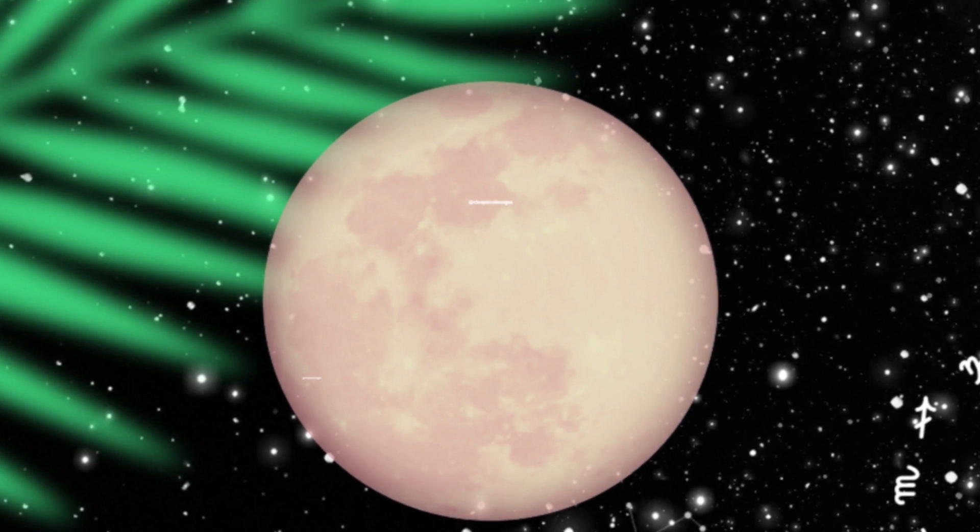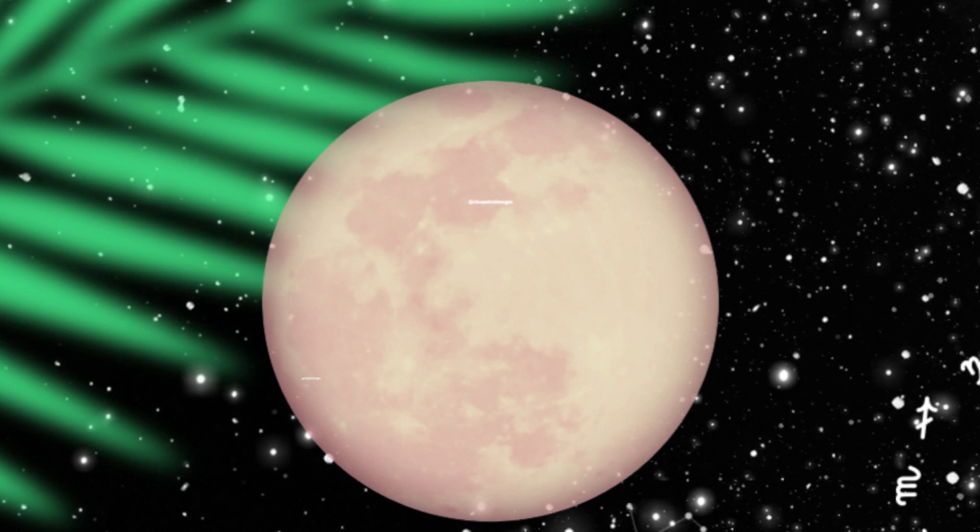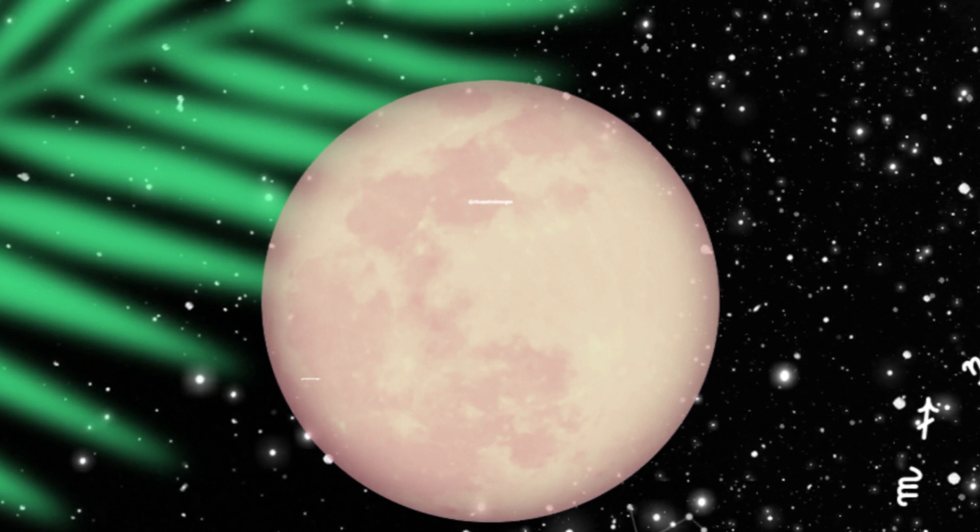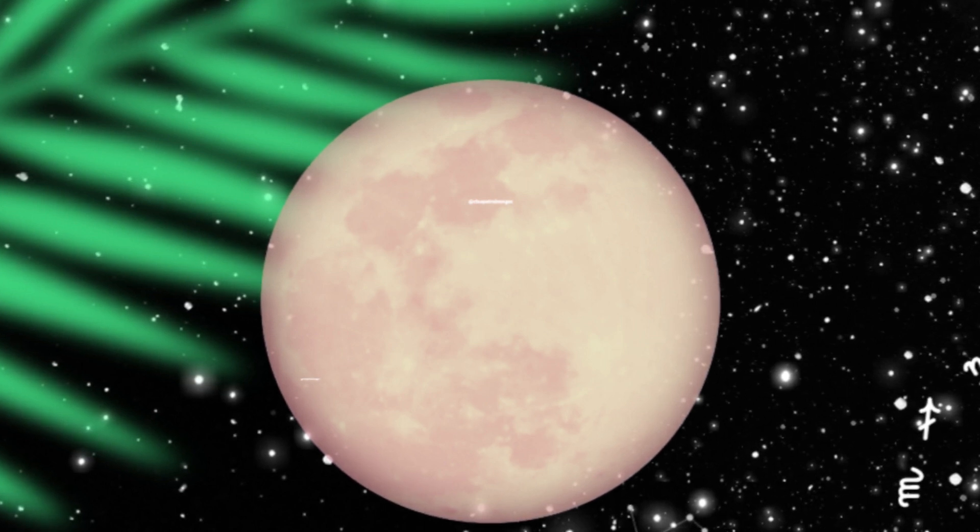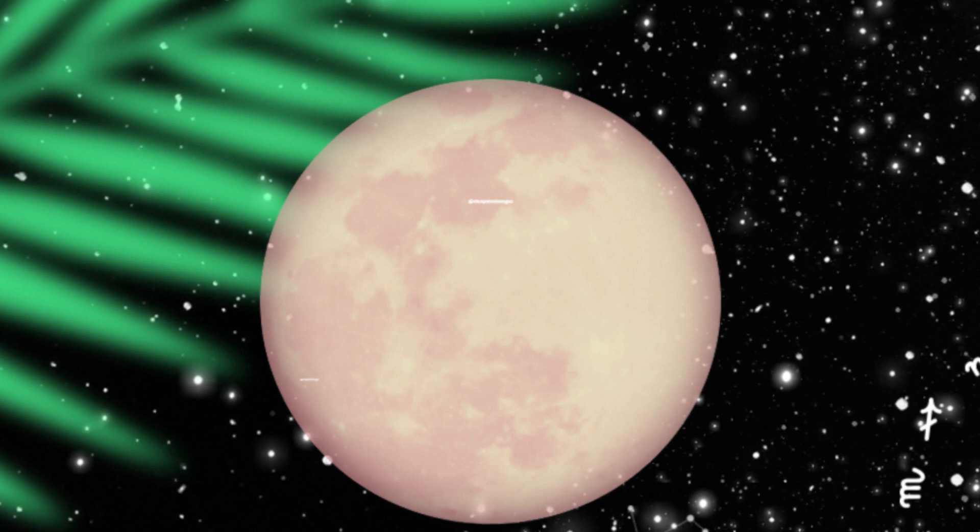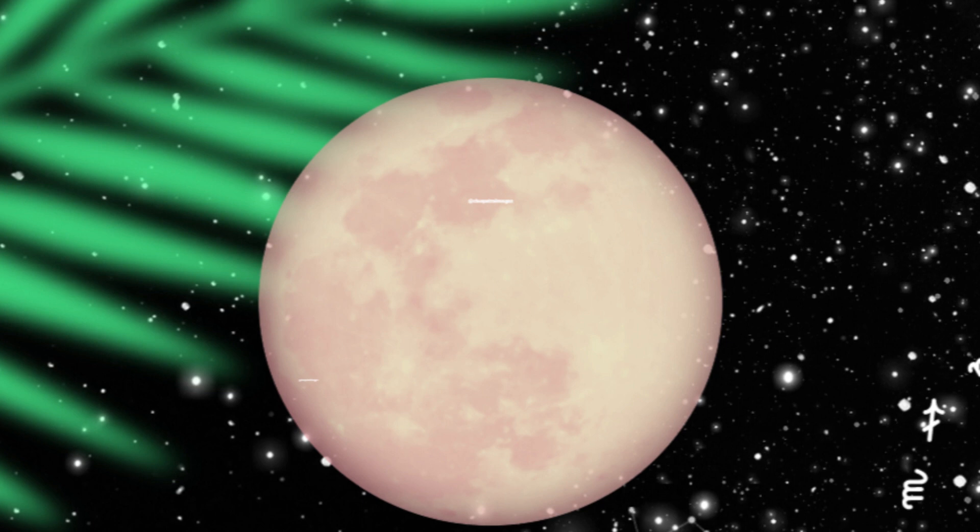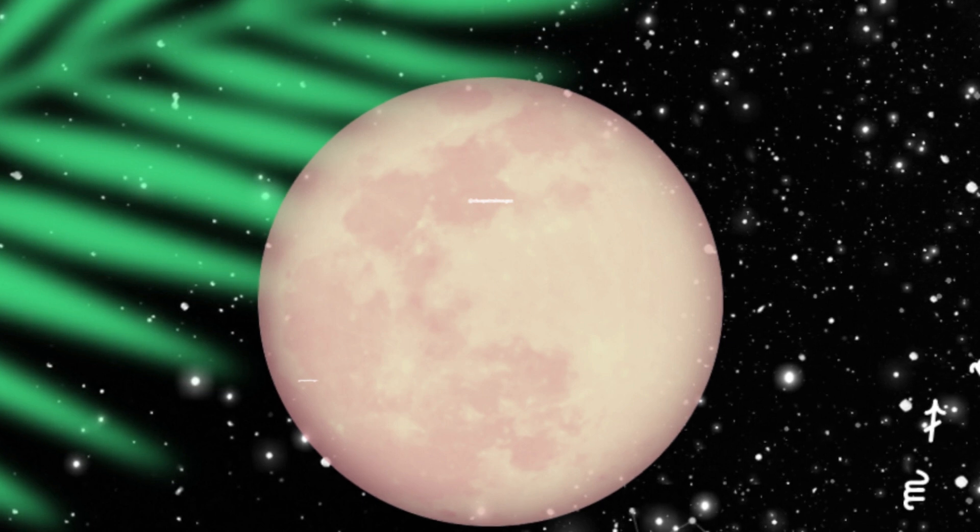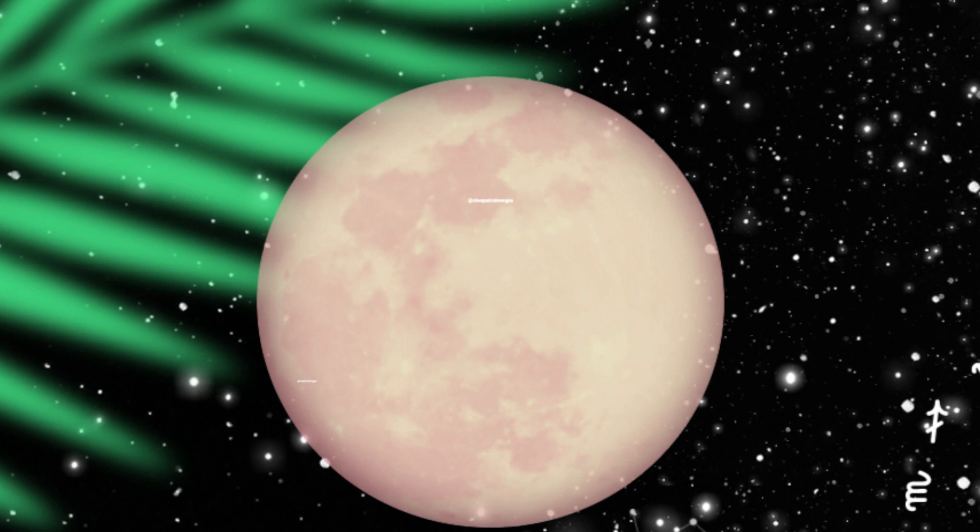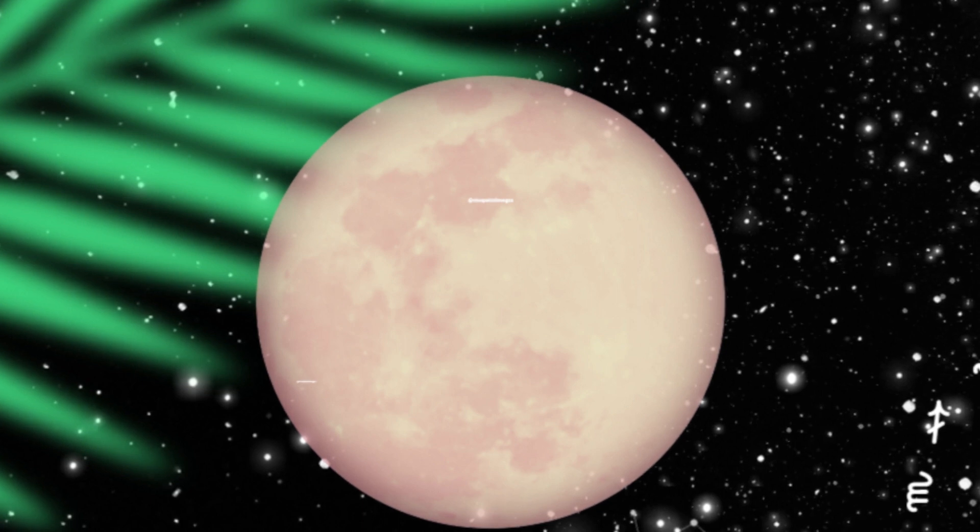During full moons, we are looking at an opposition between the moon and the sun. The moon always happens to be in the polarity point of that solar season. We're in Pisces season right now, and Virgo happens to be the opposite of Pisces. Pisces has two rulers: Jupiter being the ancient ruler of Pisces, and Neptune being its modern ruler.